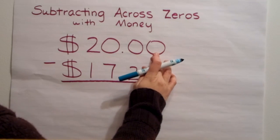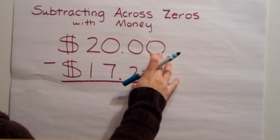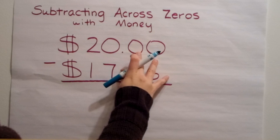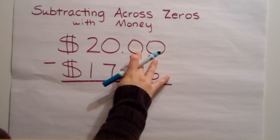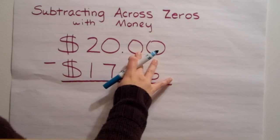There's zero in the top number. We cannot subtract because we'll have to go next door to ungroup. When we go next door to the tenths place, there's a zero. We cannot ungroup from here because there's zero.